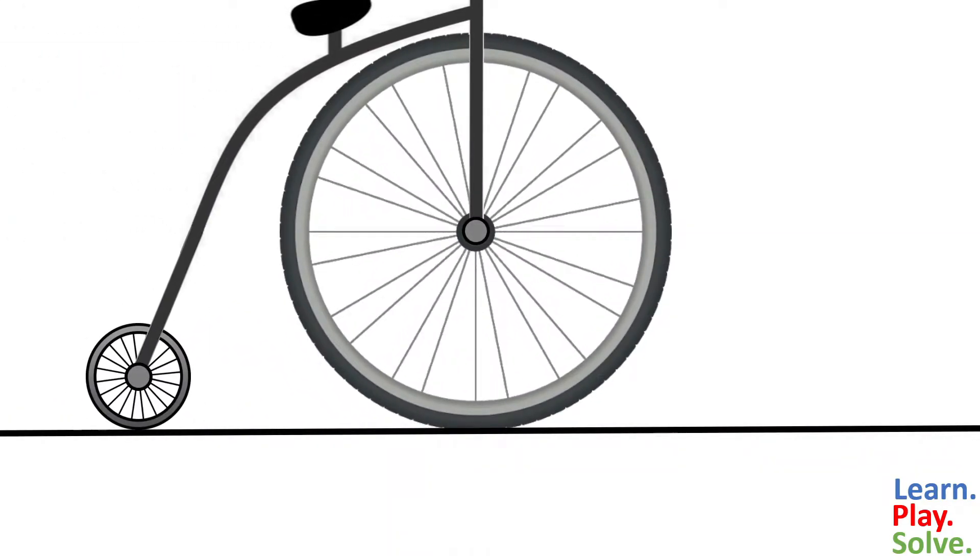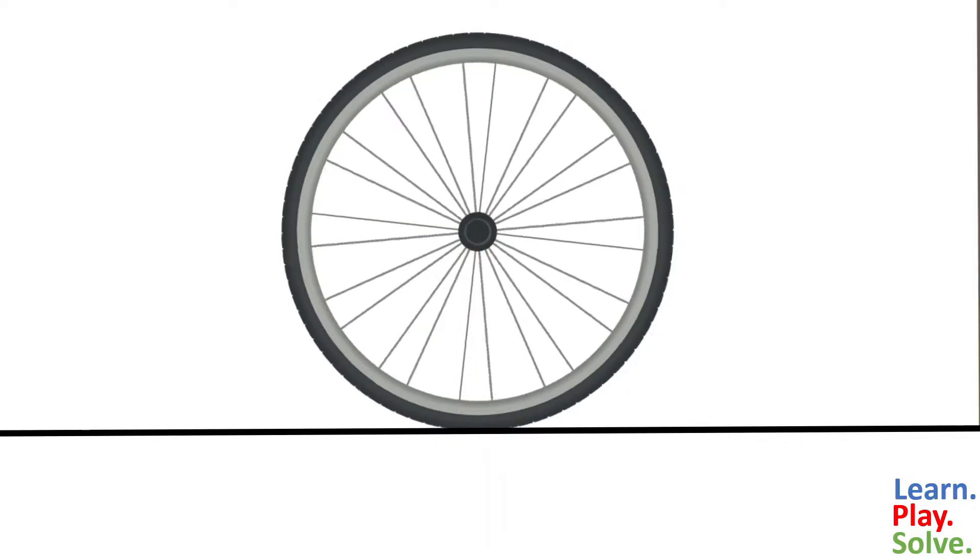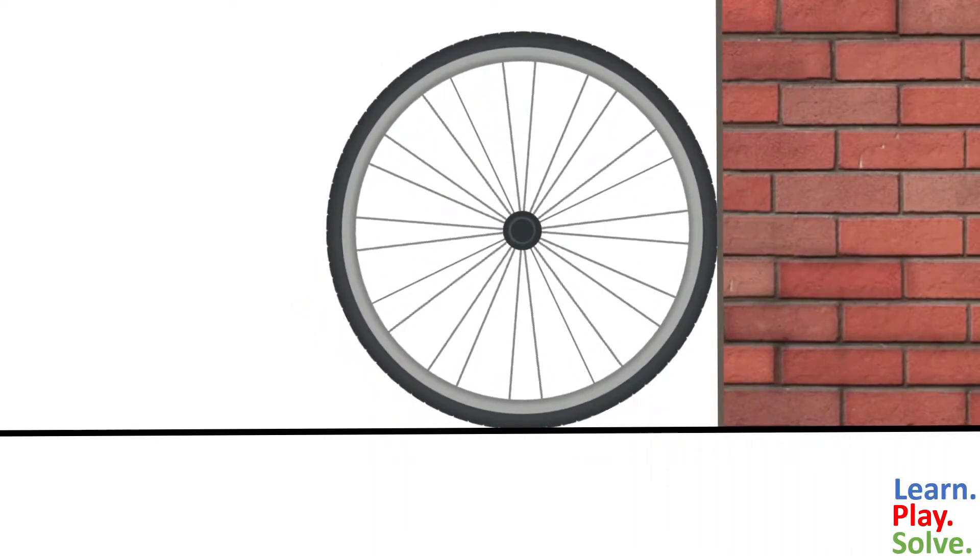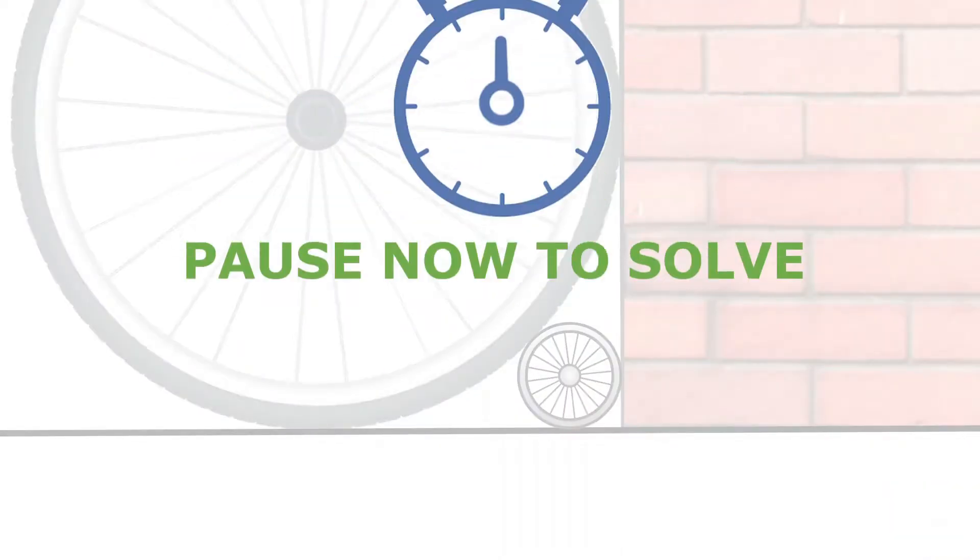Suppose you have a large bicycle tire that has a radius of 1 meter. If you roll this tire up against a vertical surface like a wall, what is the largest sized wheel you could fit between the wall and the tire like this? Pause now to give this problem a shot.